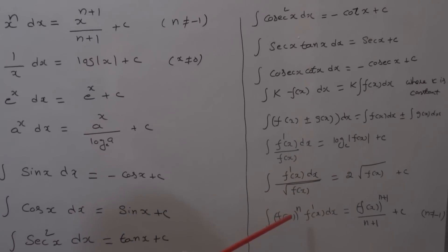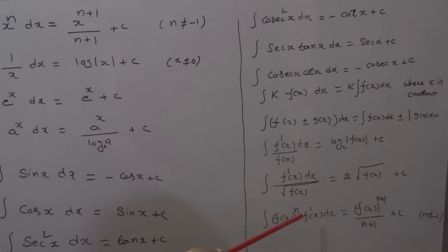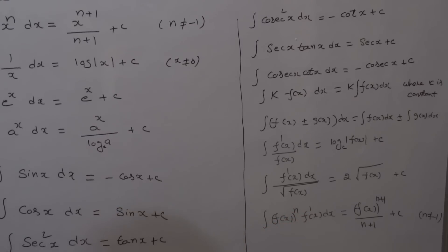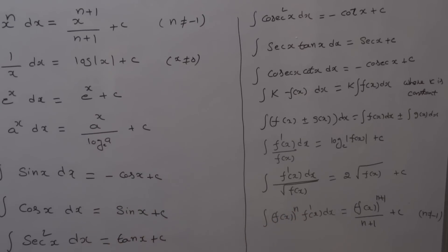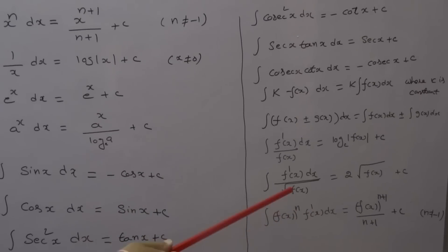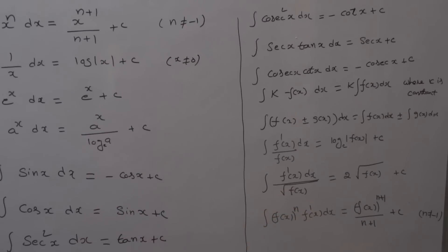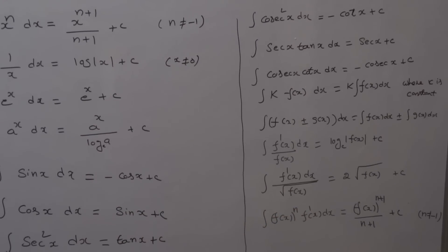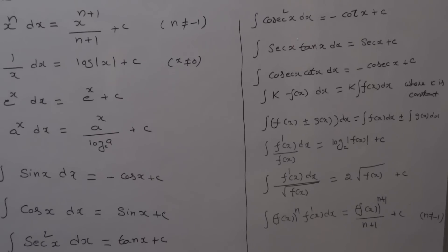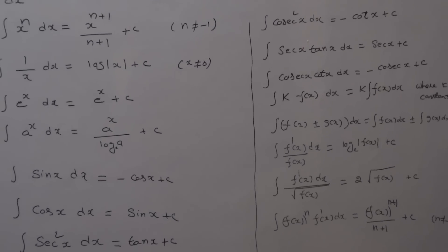Integral of [f(x)]^n times f'(x) dx is equal to [f(x)]^(n+1) by (n+1) plus c, where n is not equal to minus 1.